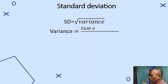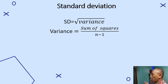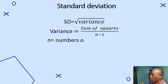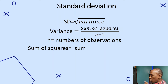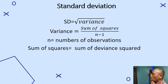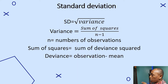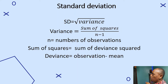Let's go to the calculation of the standard deviation. We obtain standard deviation from the square root of variance, and variance equals the sum of squares divided by n − 1, where n is the number of observations. The sum of squares is obtained by summing the squared deviations, where deviance equals observation minus mean.